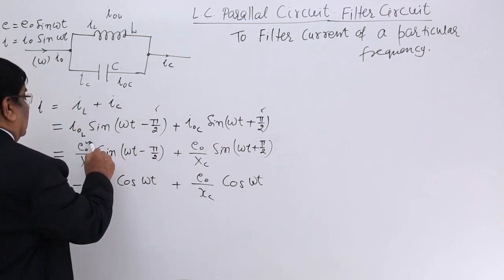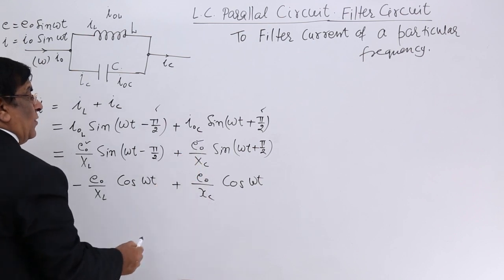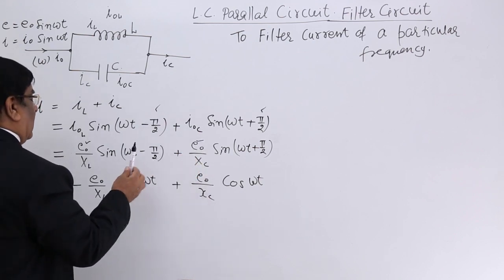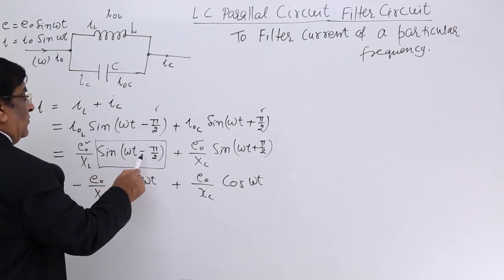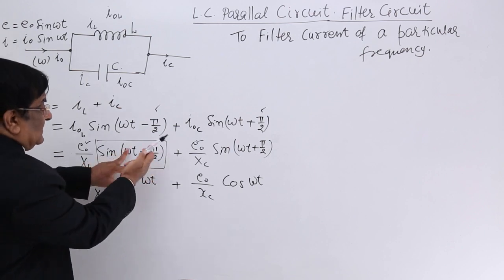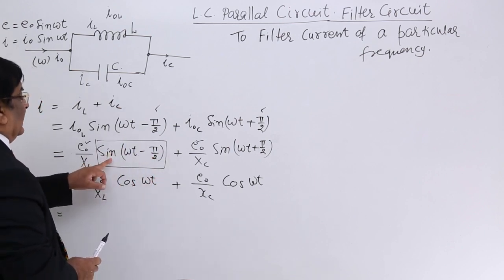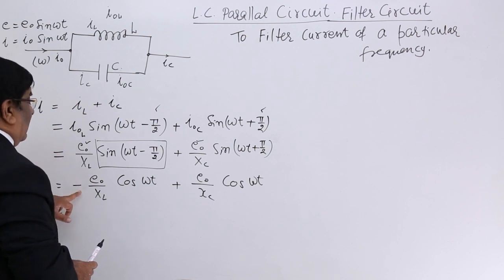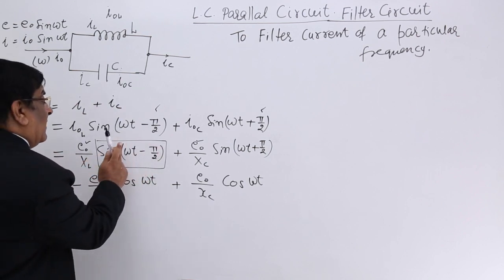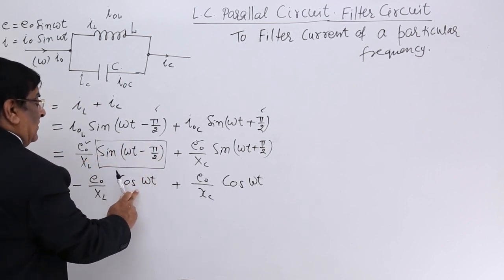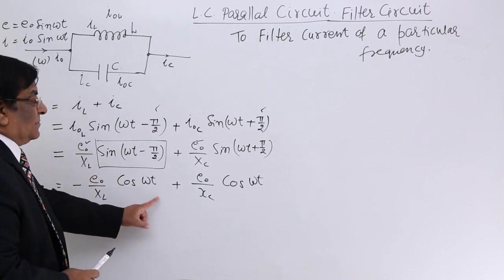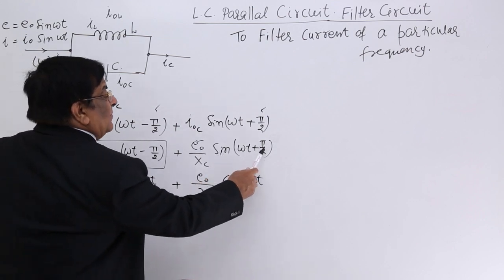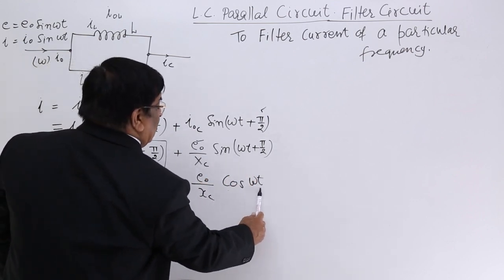The potential difference here is E₀. So E₀ upon XL replaces this. Here E₀ upon XC replaces this. Rest remains same. Now in this two E₀, E₀ is common. We will take it out later. First, this trigonometric function, sin(ωt - π/2) is equal to, reverse this, π/2 - ωt and there will be a minus here. But sin(π/2 - ωt) is equal to cos ωt with that minus.